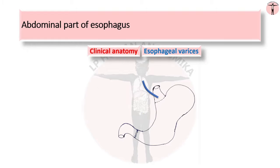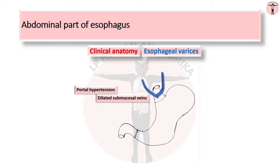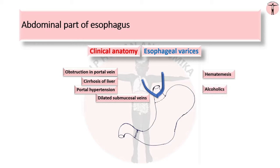Esophageal varices are abnormally dilated submucosal veins in the wall of the esophagus that lie within the portosystemic anastomosis. They are usually produced when pressure in the portal system increases beyond normal — a state known as portal hypertension. Portal hypertension most commonly occurs secondary to chronic liver disease such as cirrhosis, or an obstruction in the portal vein. The varices are predisposed to bleeding, with most patients presenting with hematemesis. Alcoholics are at high risk of developing esophageal varices.